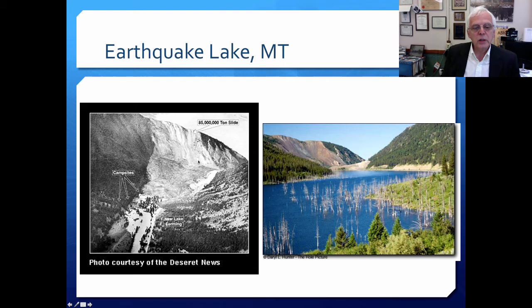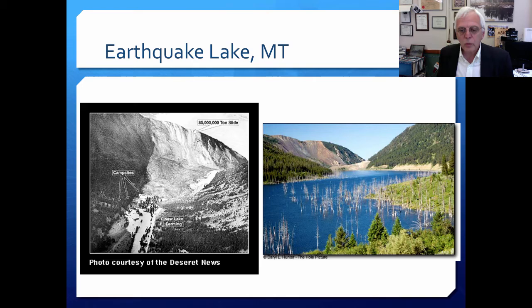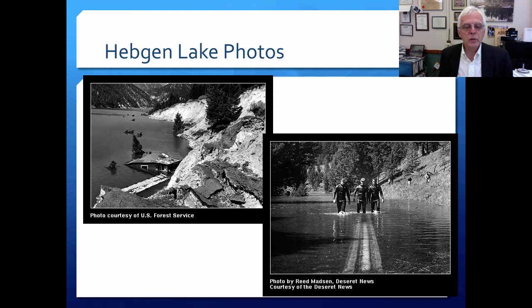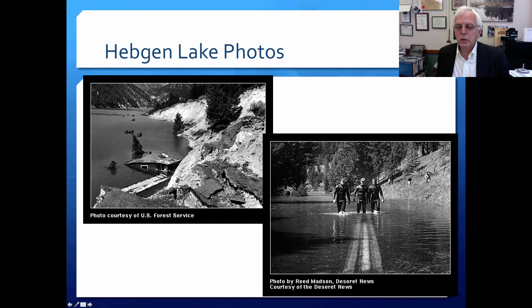The landslide came down and covered campsites, killing a number of people in the 1960s. Because of the great fall of material into a very active river, the river backed up and created a lake. Here you see photographs of shortly after the Hebgen Lake disaster — pieces of an old highway, landslide buildings, and scuba divers looking for survivors, walking along a highway that had been flooded over by the creation of this landslide lake in Yellowstone.